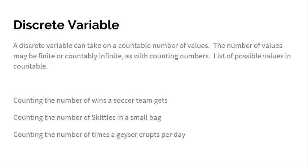We're not really working with negatives here. We're working with countable values, not measured — counted. We say it's finite, meaning there's only a set number. Like how many skills could be in a bag? You can't have a million skills in a bag — not really going to happen. It could be countably infinite, like a million skills at a factory, but the whole point is you're counting. That's discrete.